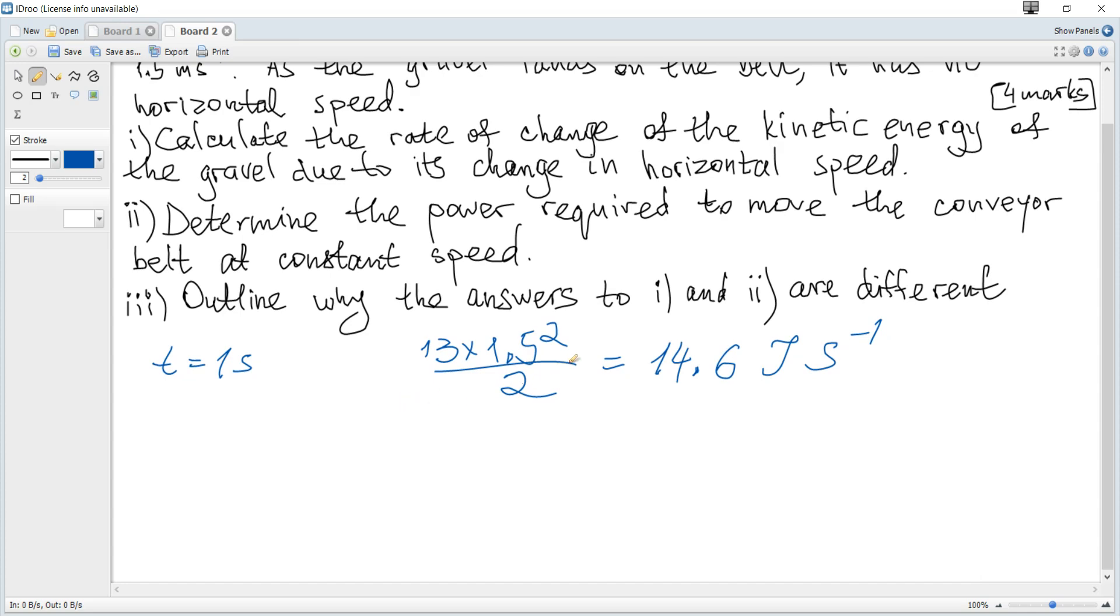Next. Determine the power required to move the conveyor belt at constant speed. We know the formula that power is force multiplied by velocity. But how to find force? We can apply the formula impulse is equal to change in momentum. If we consider time to be equal to one second.